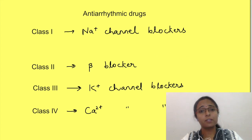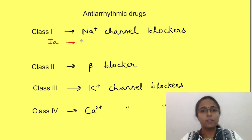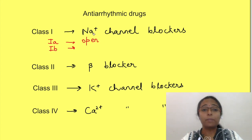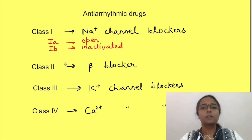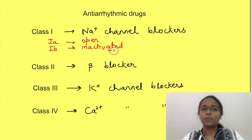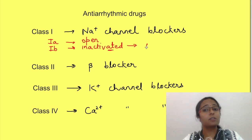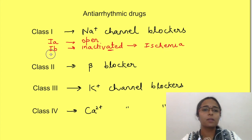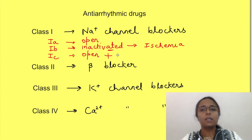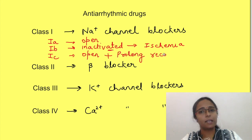Class 1 drugs further have three subclasses. Class 1a drugs block sodium channels in the open state. Class 1b drugs block sodium channels in the inactivated state — since sodium channels inactivate on depolarization, the most important effect of these drugs occurs on already depolarized tissue, as seen in ischemia. Class 1c drugs block sodium channels in the open state and also prolong the recovery time of the channels.